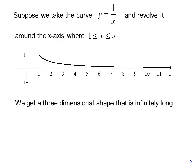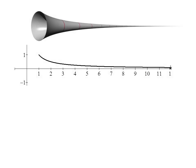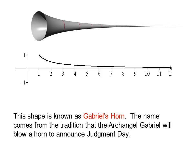We get a three-dimensional shape that is infinitely long. This shape is known as Gabriel's Horn.